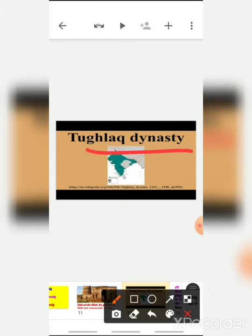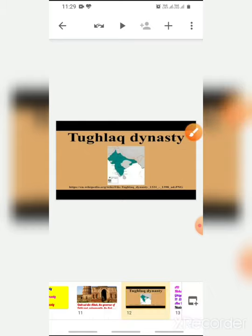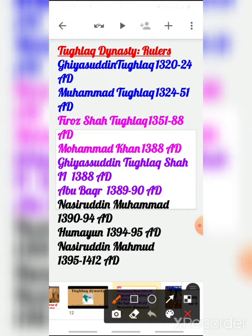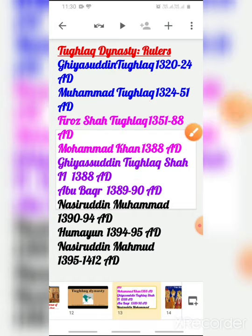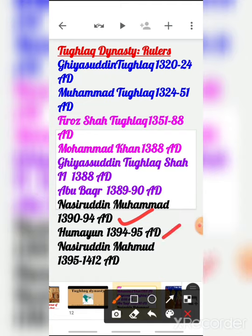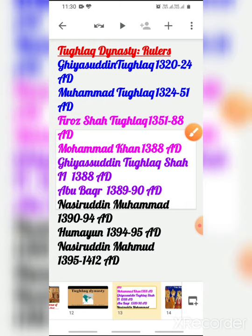After the Delhi Sultans comes the Tughlaq dynasty, who were also from the Muslim kingdom. The rulers of the Tughlaq dynasty were: Ghiyasuddin Tughlaq (1320–1324), Muhammad Tughlaq (1324–1351), Firoz Shah Tughlaq (1351–1388), Muhammad Khan (1388), Ghiyasuddin Tughlaq (1389–1390), Nasiruddin Muhammad (1390–1394), Humayun (1394–1395), and Nasiruddin Mahmud (1395–1412).